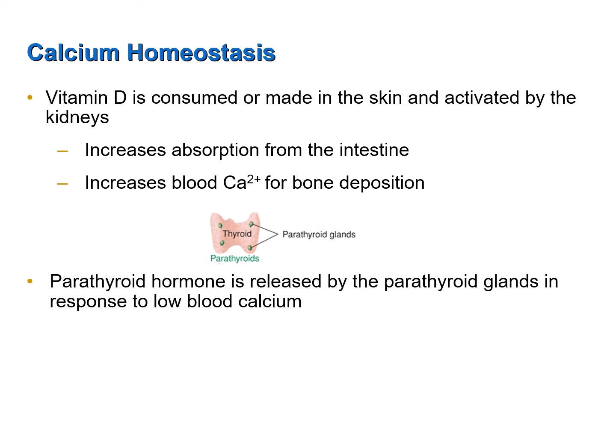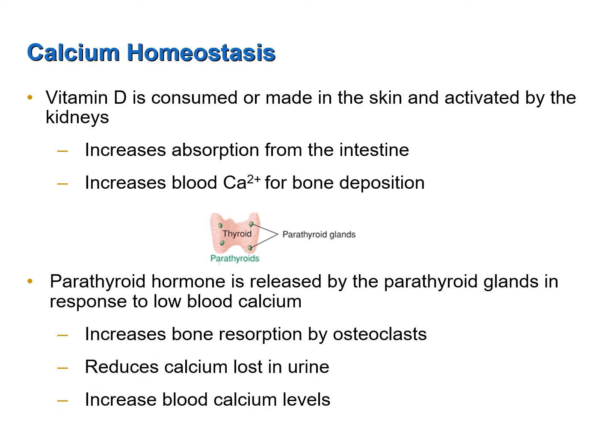Parathyroid hormone is released by the parathyroid gland in response to low blood calcium levels. The parathyroid glands are located on and around the thyroid gland, which is found in the neck. Parathyroid hormone increases blood calcium levels by increasing the resorption of bone by osteoclasts, and it also reduces the amount of calcium lost from blood into the urine.